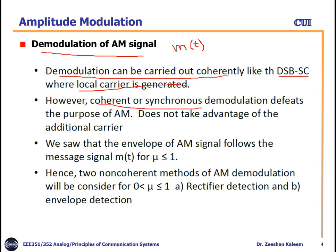However, coherent or synchronous demodulation defeats the purpose of AM. Since we are already transmitting an additional carrier in AM modulation, if we perform synchronous demodulation at the receiver side, then the purpose of transmitting the additional carrier will not be useful — we will not take advantage of the additional carrier. So how can we take advantage of the additional carrier?